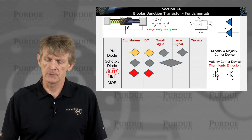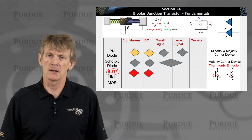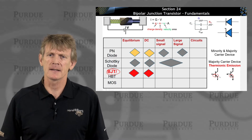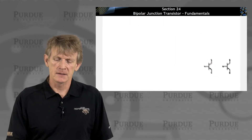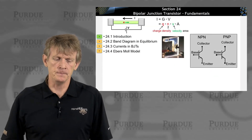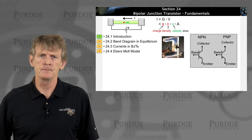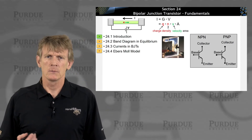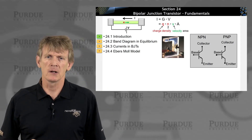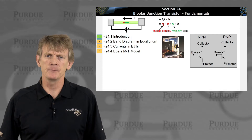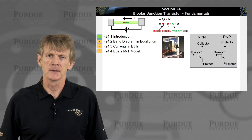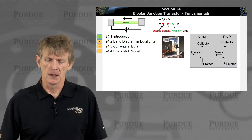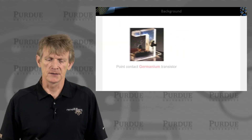We'll talk about the circuit models and why there is a diode-like symbol in the BJT. So let's dive in and lay out this section. I'll introduce the device and we'll draw a band diagram. Then we'll look at some currents, and then there's something called an Ebers-Moll model that describes the currents very well in this device.